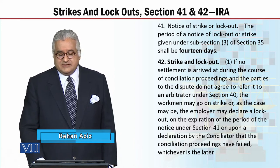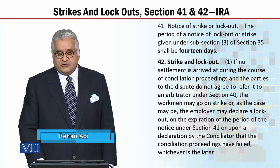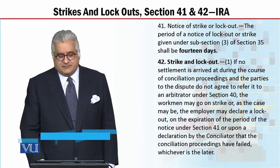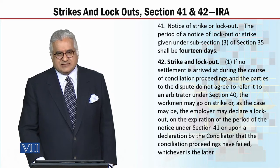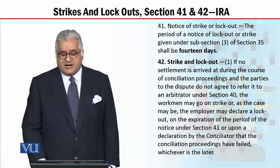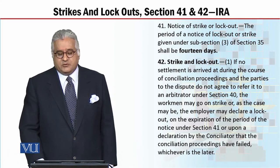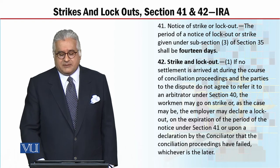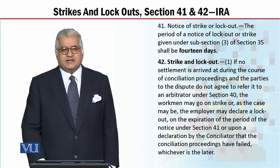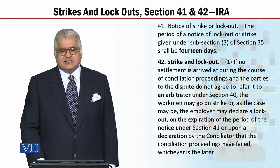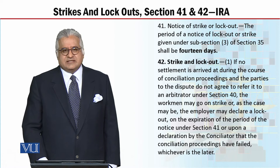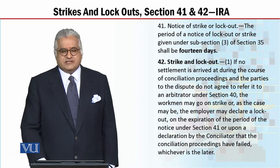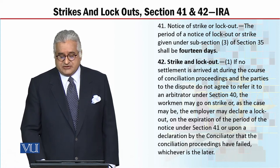If no settlement is arrived at during the course of conciliation proceedings — and I will explain what conciliation proceedings are shortly — and the parties to the dispute do not agree to refer it to an arbitrator under Section 40, then the first remedy is conciliation proceedings, and after that comes arbitration.